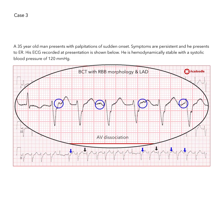In fact, the case under consideration here is a condition termed idiopathic fascicular left ventricular tachycardia. The combination of right bundle branch block morphology and left axis deviation is characteristic of this disorder. The clinical presentation described here is typical.